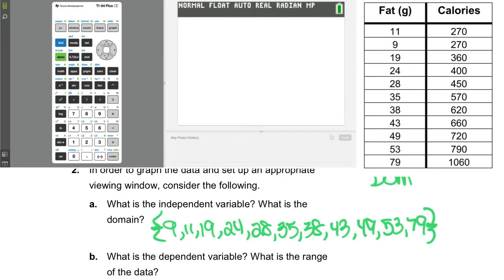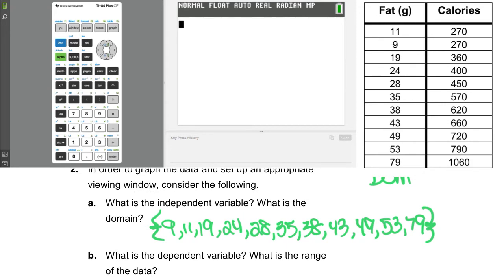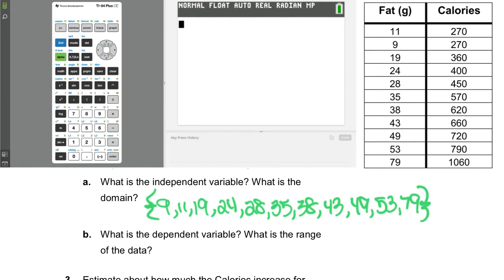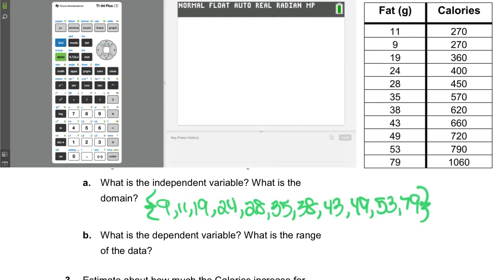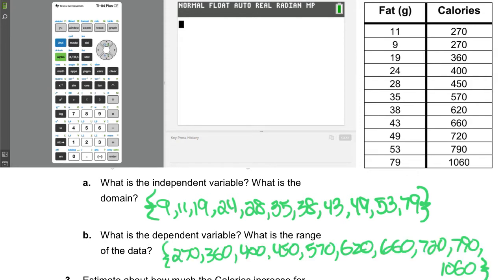Part B, what's the dependent variable? Well, we know by now that that's calories. So the range for that, we would just write down all the values in a list as well. We could write 270 once, even though it's listed twice. Okay.